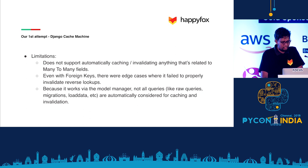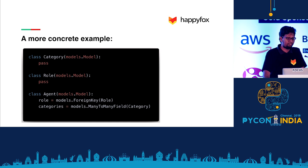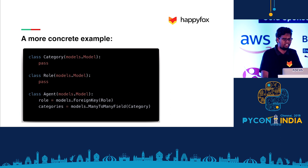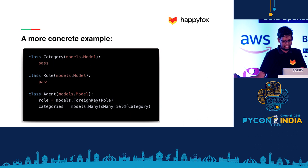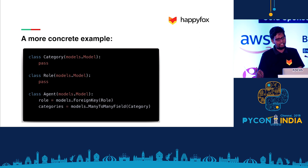Let's look at a more concrete example. Our application is a helpdesk ticketing application — most of you would have used something like Jira. You have tickets categorized in some way, users with roles and permissions. Here I have a category model, a role model, and an agent model which has a foreign key to a role and a many-to-many with categories. This is the kind of thing that is very hard to cache and invalidate automatically, because you never know which query is connecting to which data model.